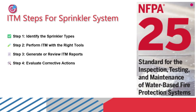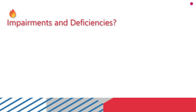Step four: evaluate corrective actions — if there were deficiencies or impairments, confirm that the right corrective actions were taken and taken on time. Step five: check the tagging — review the facility and make sure tagging has been done correctly using the right codes and in the proper locations as per the local AHJ requirements. These five steps help ensure the sprinkler system stays compliant, functional, and ready to protect life and property.